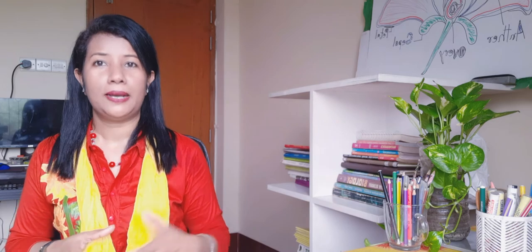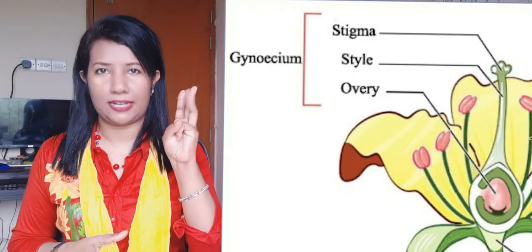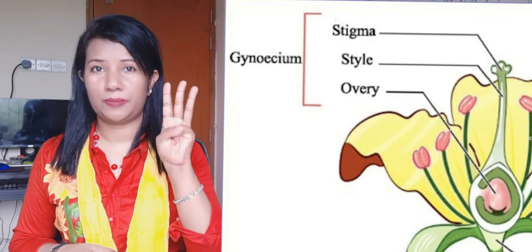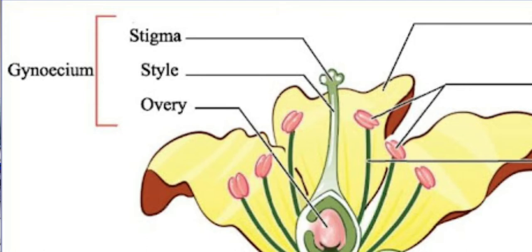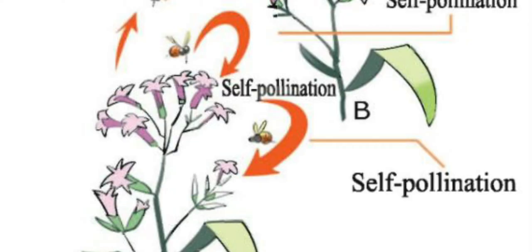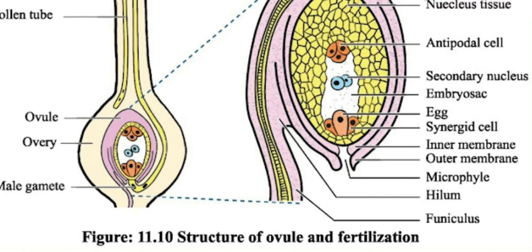Number five is the gynoecium, which is the female part of the flower. It consists of one or more units called carpels. Carpels have three parts: ovary, style, and stigma. The stigma is a swollen structure at the end of the style which receives the pollen grains. The ovary contains one or more ovules, and within each mature ovule is a female gamete — the egg cell — called the ovum.